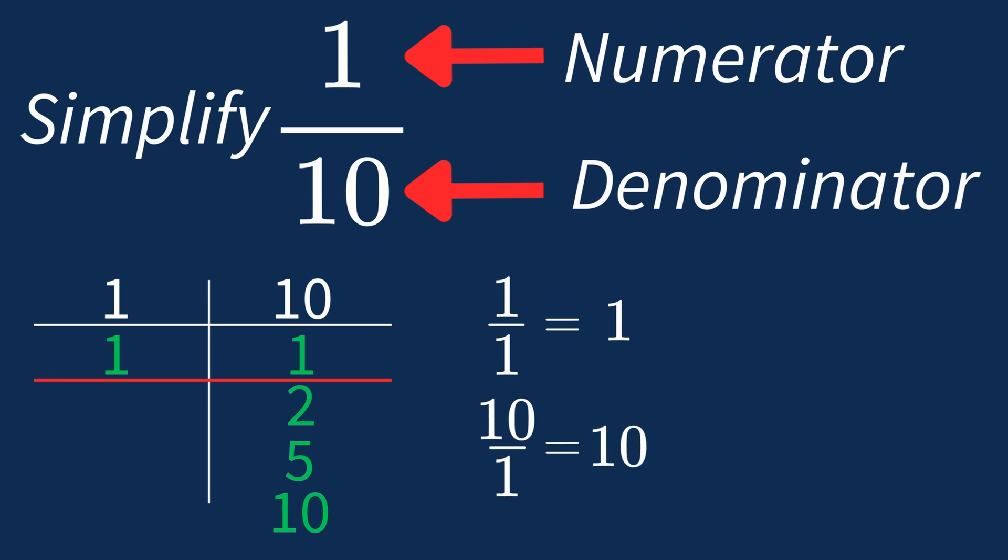So after dividing the numerator and denominator by their greatest common factor of 1, we end up with the same fraction, 1 over 10.